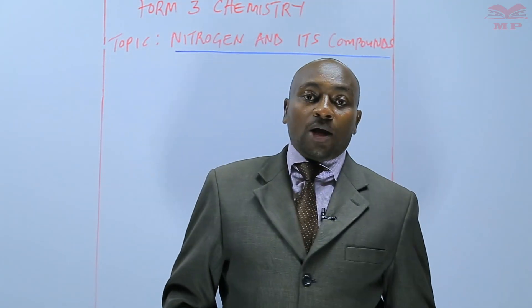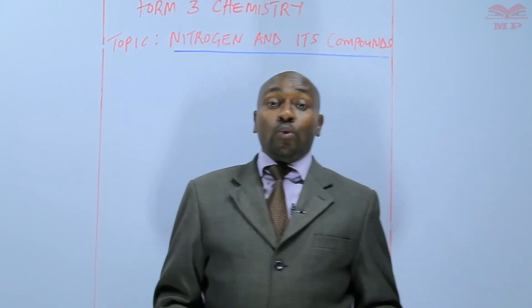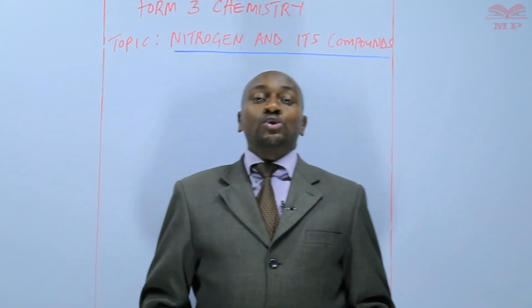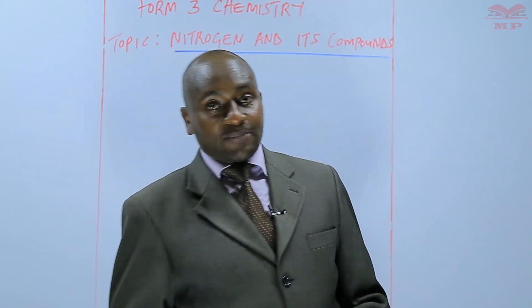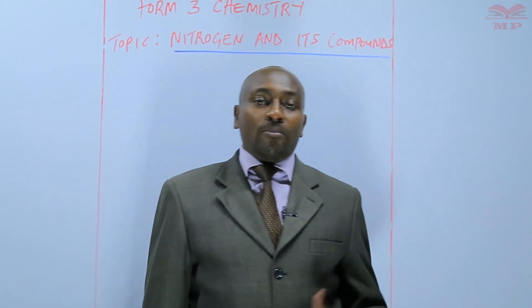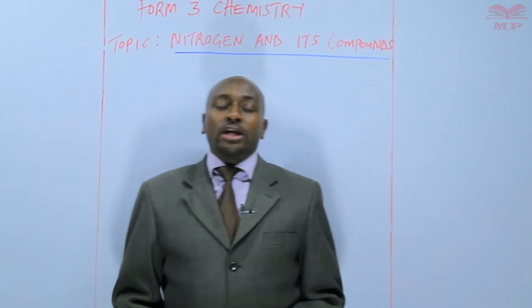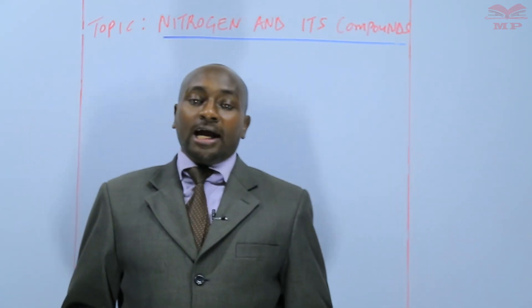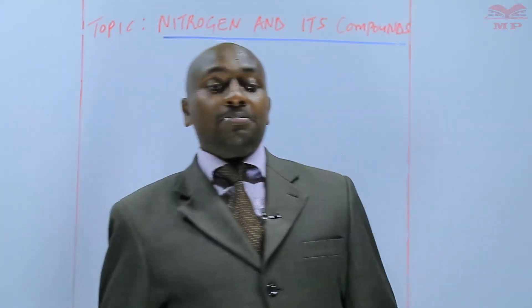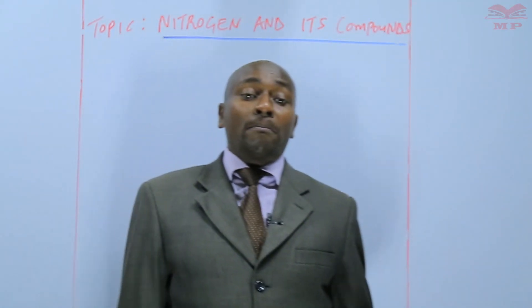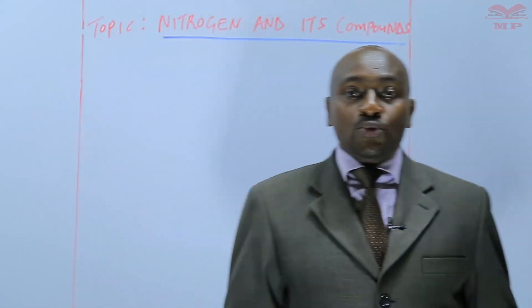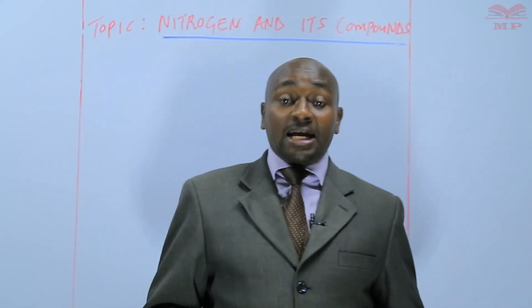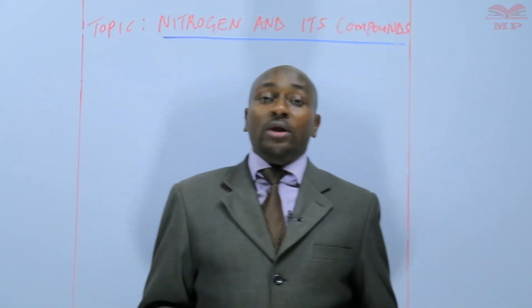During the last lesson, we discussed how aqueous ammonia can be used to identify metallic ions by use of the color of the precipitate. We saw that zinc ions form a white precipitate, copper(II) ions form a pale blue precipitate, iron(II) ions form a pale green precipitate, and iron(III) ions form a brown precipitate. We would like to have a summary of the colors of precipitates formed by different ions when they react with aqueous ammonia.